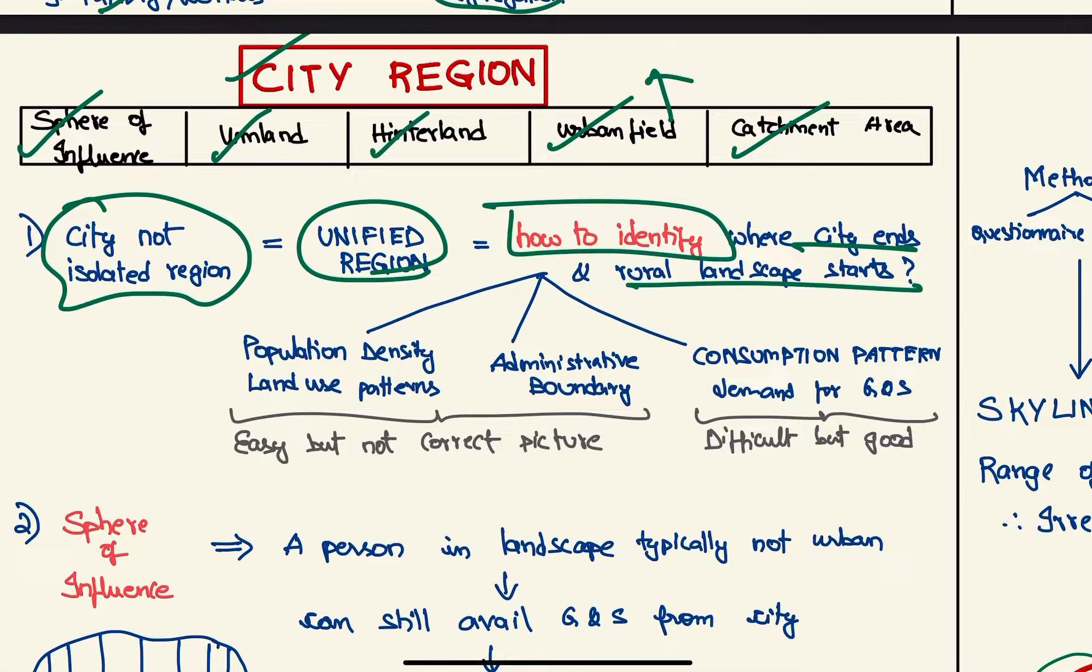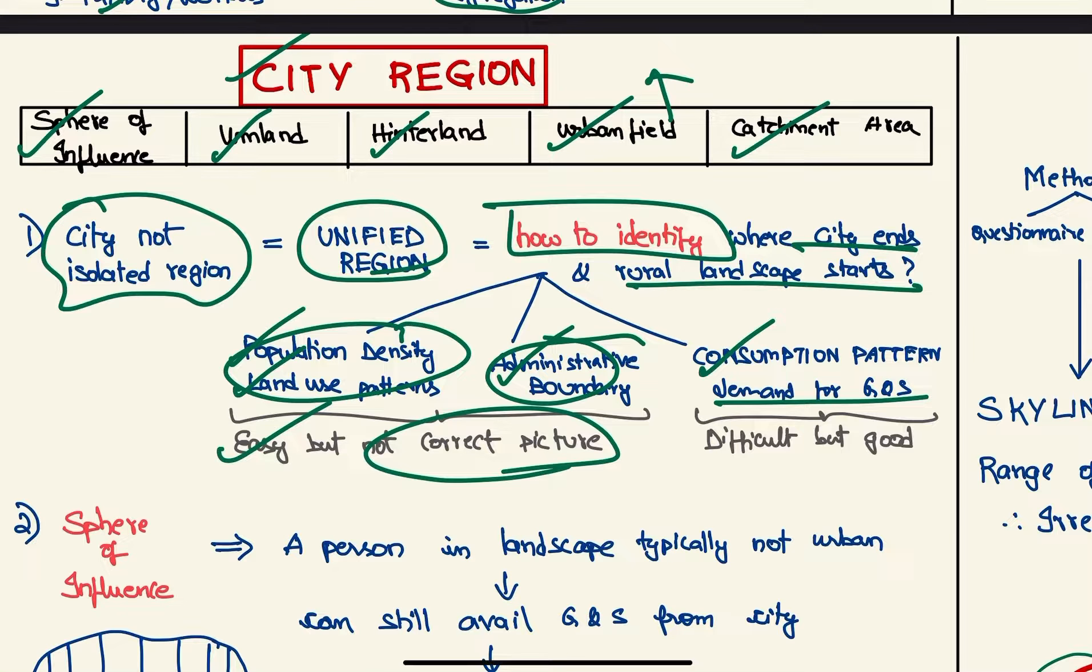We have three methods. First one is using population density and land use pattern. Second is simply using the administrative boundary. And third one is using the consumption pattern, that is demand for goods and services.